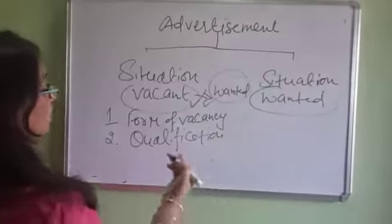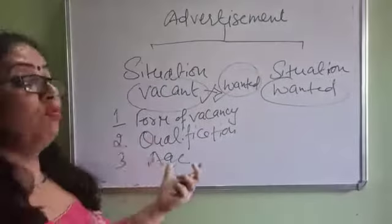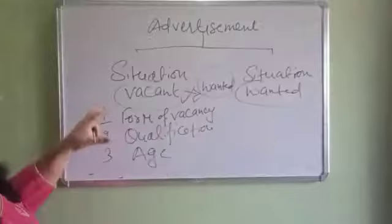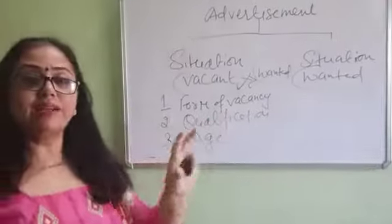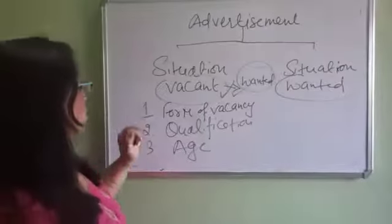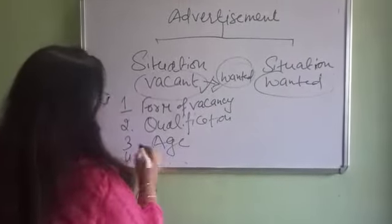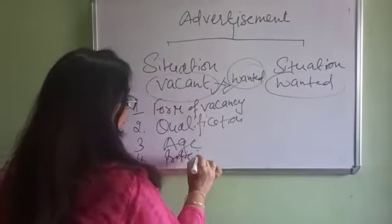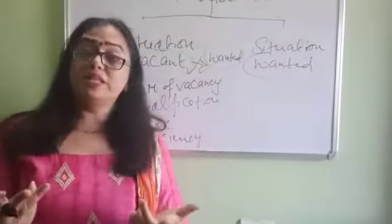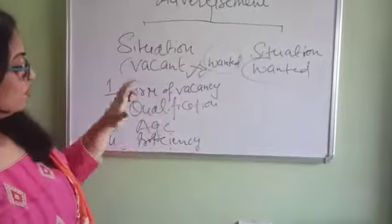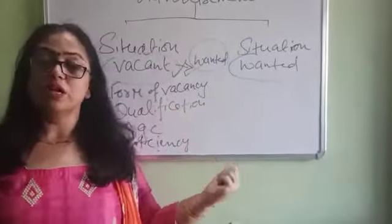You are using commas to sum up the points because you are paying per word. So: form of vacancy, qualification required, then the age of the person — for instance, 'wanted a receptionist, arts graduate, around 25 years'. Age limit is mentioned in some vacancies. After that, any proficiency required in any field — like 'computer savvy person', 'good fluency in English', 'good looking' — some companies and job profiles want these things mentioned.